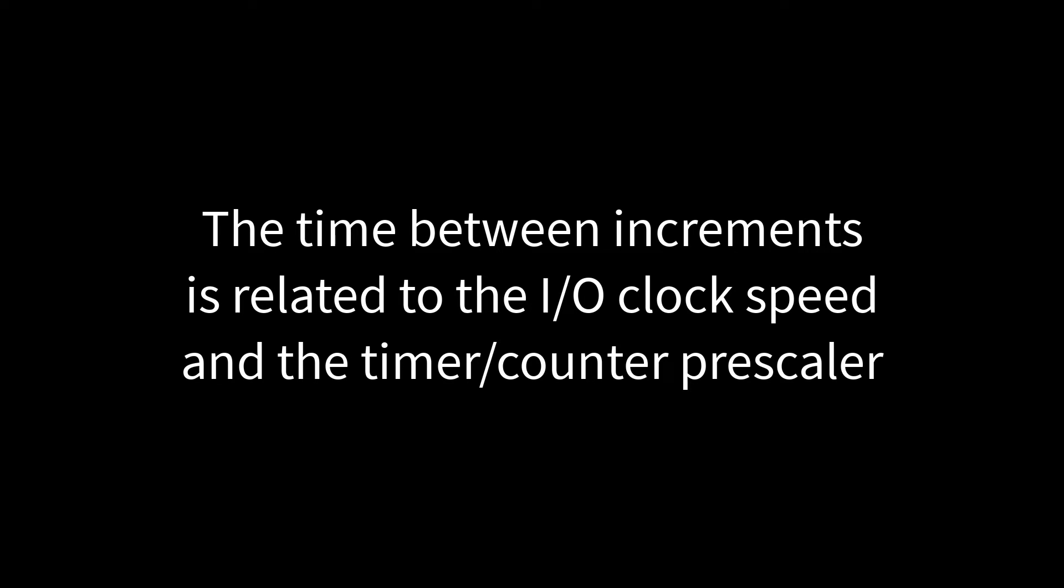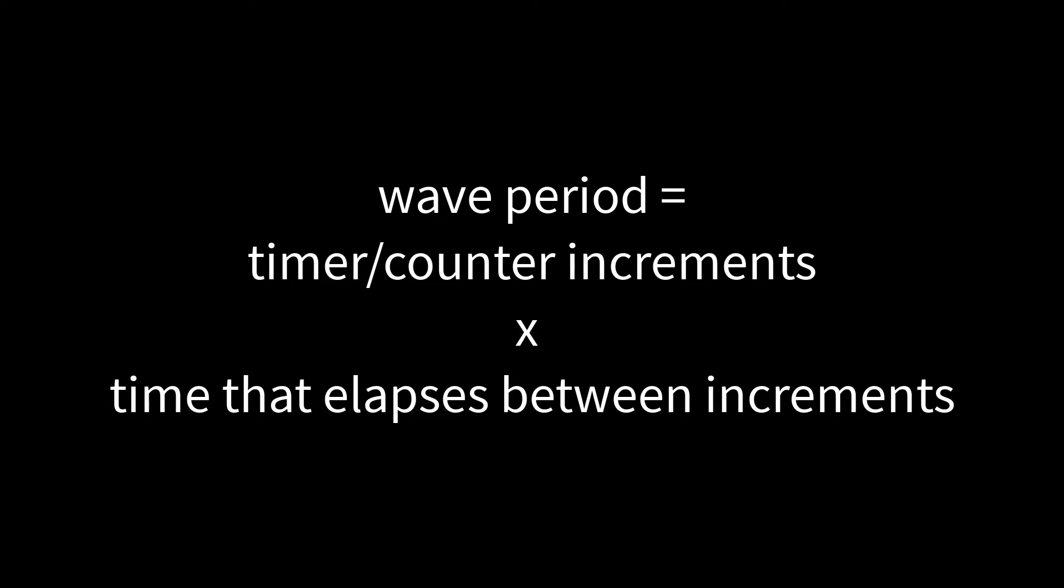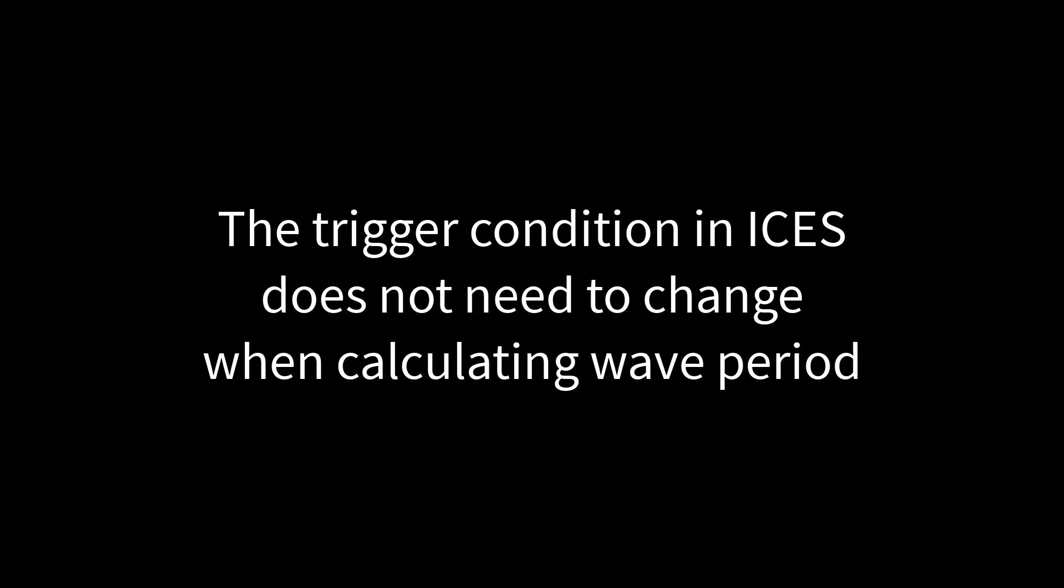The amount of time that occurs between timer counter increments is related to the IO clock frequency and the prescaler that is configured in TCCR1B. The amount of time per interval equals the prescaler divided by the IO clock frequency. Multiply the amount of time per interval times the number of intervals and you have calculated the period of the square wave. This is the simplest thing to calculate because the trigger condition remains constant, so the value in ICES does not need to change.